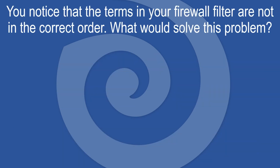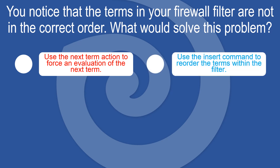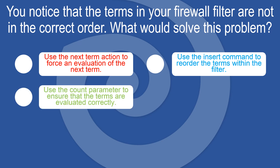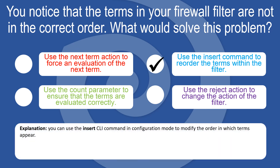You notice that the terms in your firewall filter are not in the correct order. What would solve this problem? Use the next term action, the insert command, the count parameter, or the reject action. You can use the insert CLI command in configuration mode to modify the order in which terms appear.